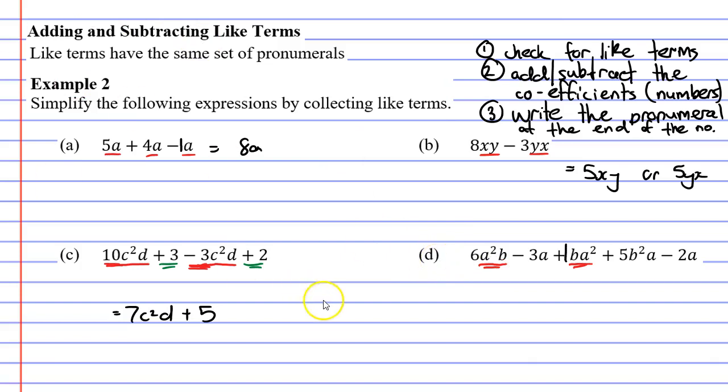So let's add or subtract our coefficients. So 6 plus 1 giving us 7. So write that down equals 7 and we write the set of pronumerals next to it which is a²b or we could have had ba².